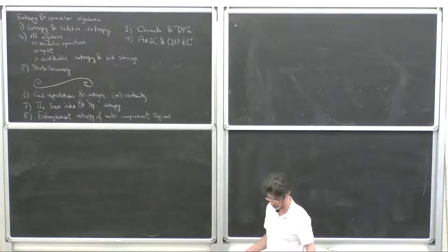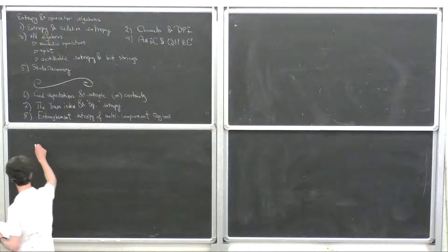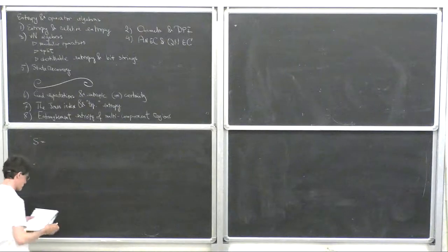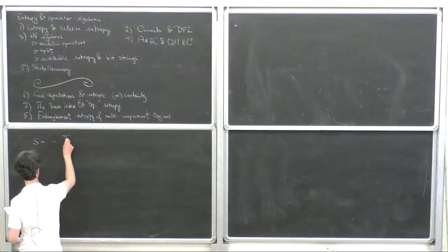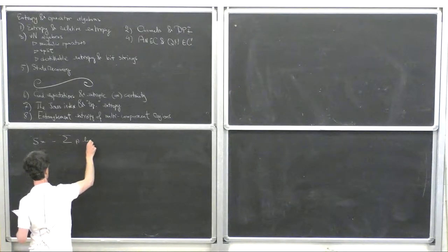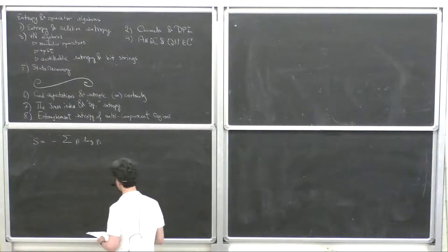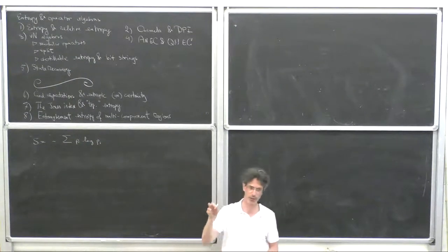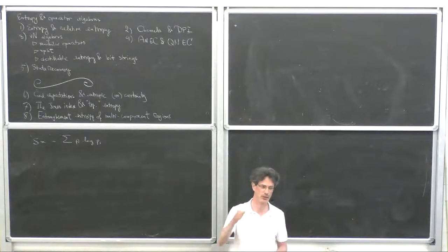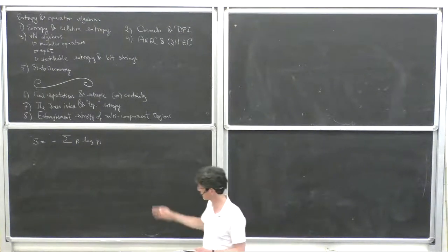I want to talk about entropy and relative entropy. You know what entropy is — well, nobody really knows what entropy is, but there's a formula that is written down. My logarithm is the natural base e, so that's the classical probability distribution. The eigenvalues of a density matrix are just the classical probability distribution, so for S it doesn't actually matter whether quantum or classical, just for this formula.